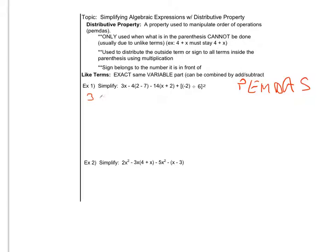So doing that, I'm going to have 3x minus 4, 2 minus 7 is negative 5, minus 14 times x plus 2 plus, I'm going to go ahead and do a little scratch work here so I can write it in its simplified form. Negative 2 over 6 can both be reduced by 2. So I'm going to say that that's negative 1 third squared. Okay, I did my parentheses.